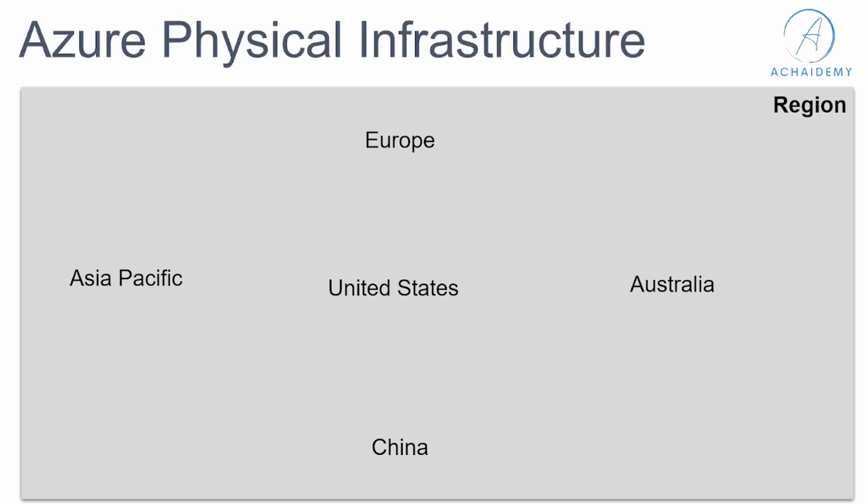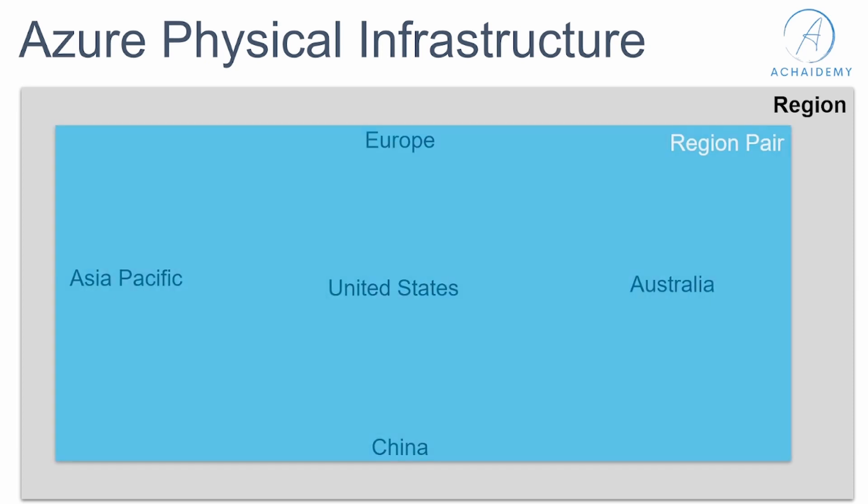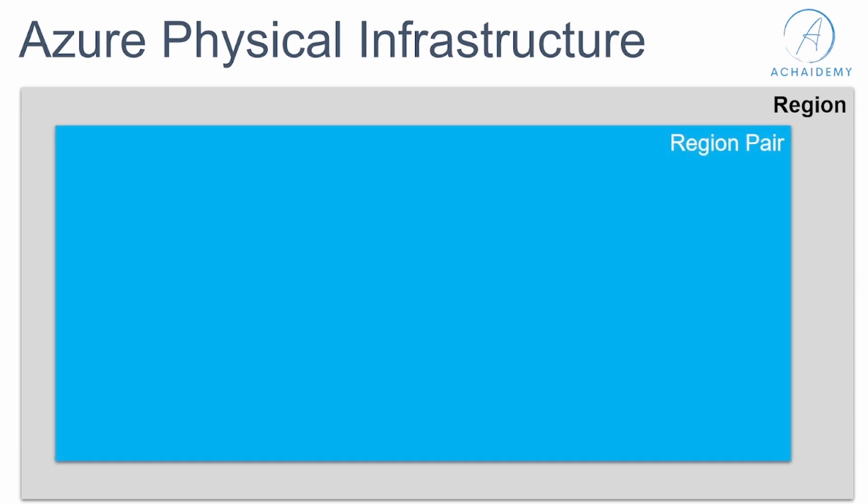The physical infrastructure begins with Azure being available across all regions — and there are many more locations than shown here. A region is the location where the Azure data centers are available. It spans from the United States to Asia, Europe, Australia, and China. These are some of the regions where data centers are available, and every region has a region pair.